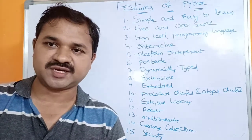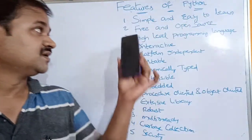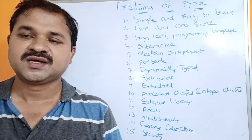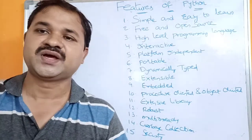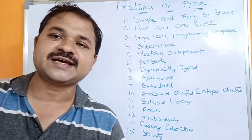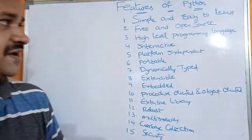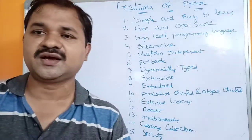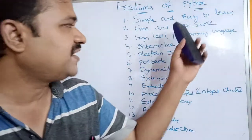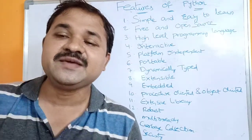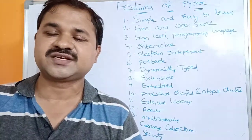In this video we are going to discuss the features of Python. There are 15 features in total. The first feature is simple and easy to learn. Python is a simple language because its syntax is very simple, and the basic structure of a Python program is very simple compared to C, C++, and Java. Python is easy to learn because reading a Python program is like reading the English language, and Python supports only 33 keywords.